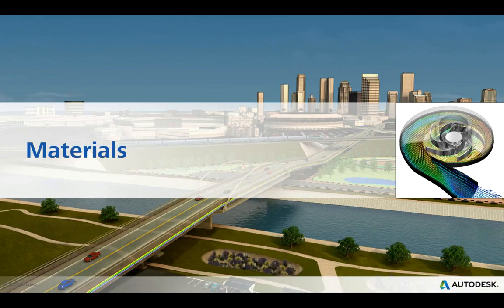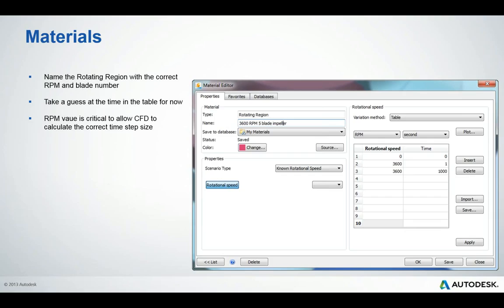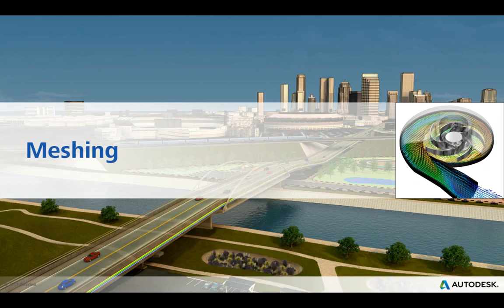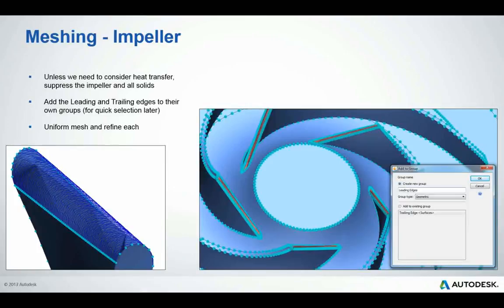For materials, most settings are set exactly as reality — external solids are solid, fluid may be air or water. We then pick our rotating region. I generally use a standard rotating region and rename it to suit my RPM and the number of blades. Similarly, I ramp the rotating region up initially over one second, then revisit the materials to ramp it up over those 50 iterations once we know what our time step size is likely to be.